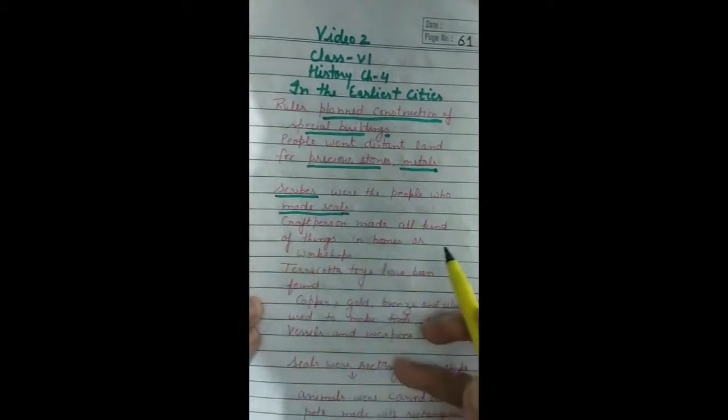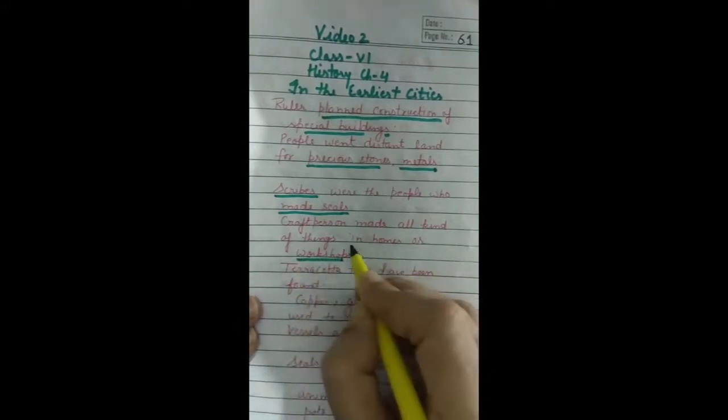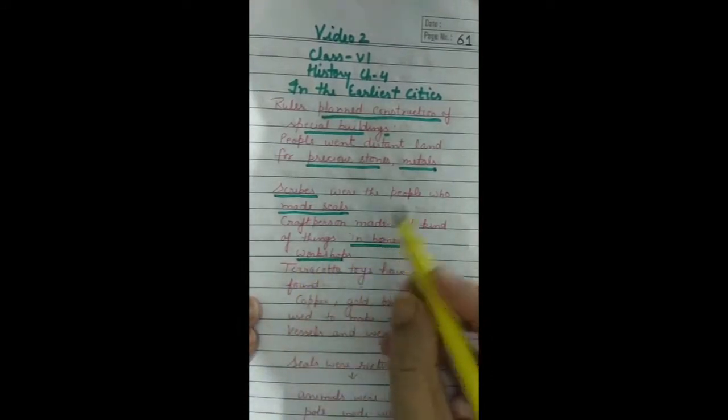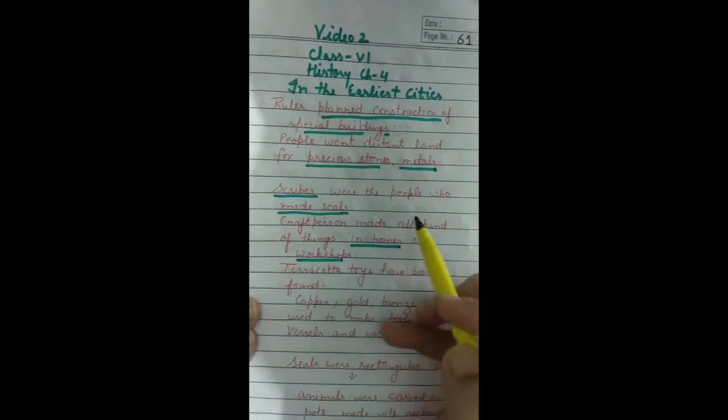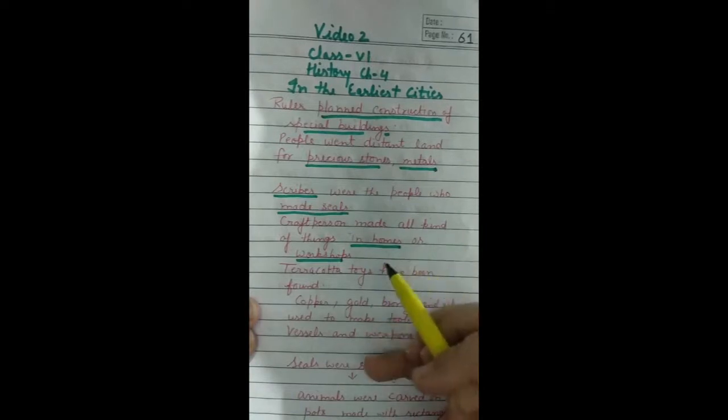Craftsmen made all kinds of things in homes and workshops. Many types of craft works were done during this time such as seal making, toys making, and stone cutting. These craftspersons made things at their home or at workshops.